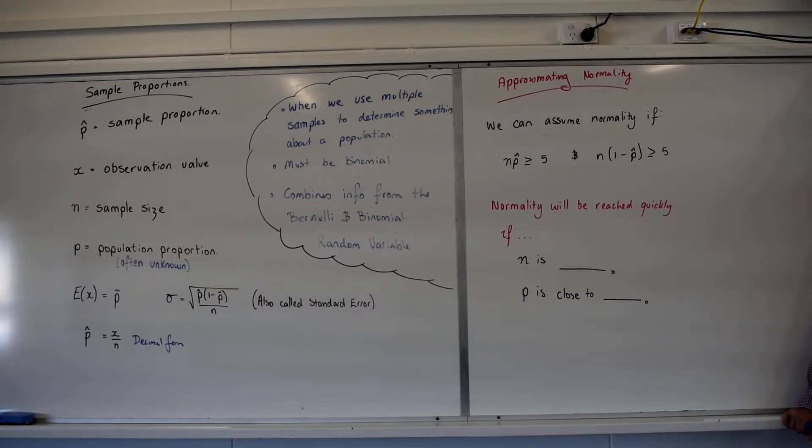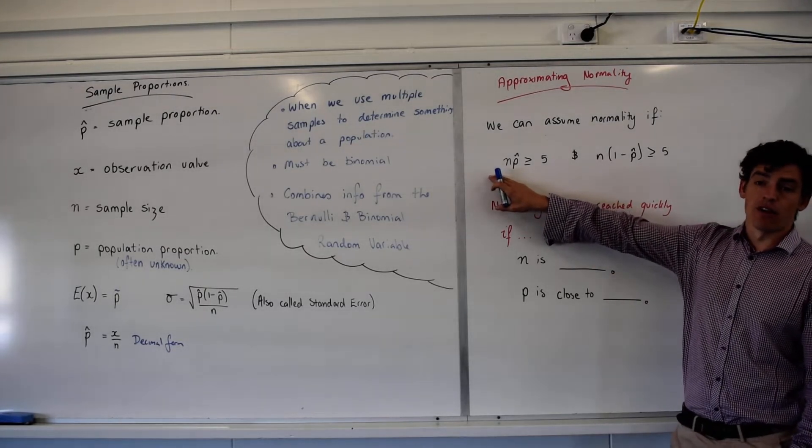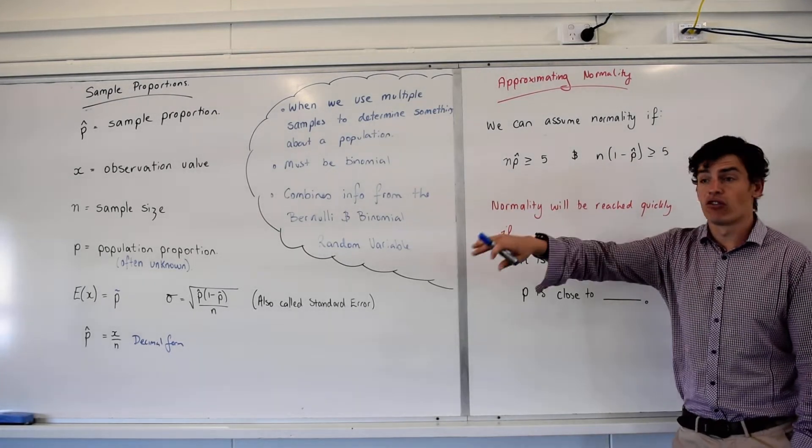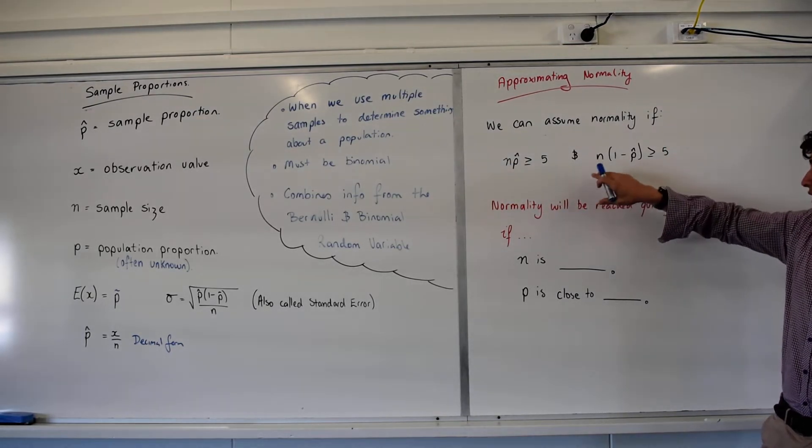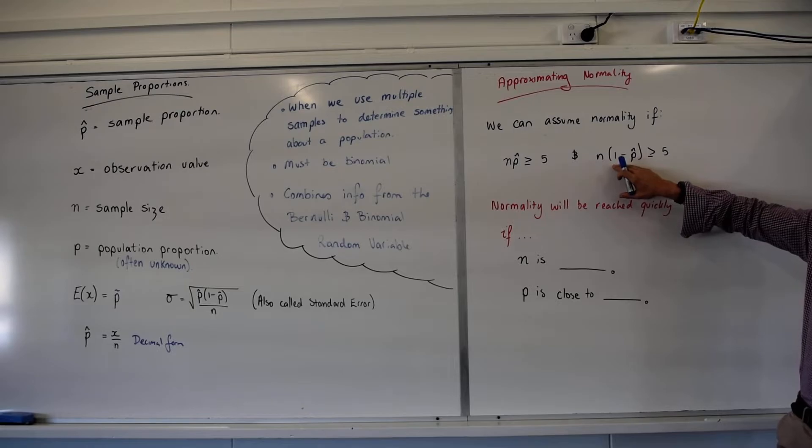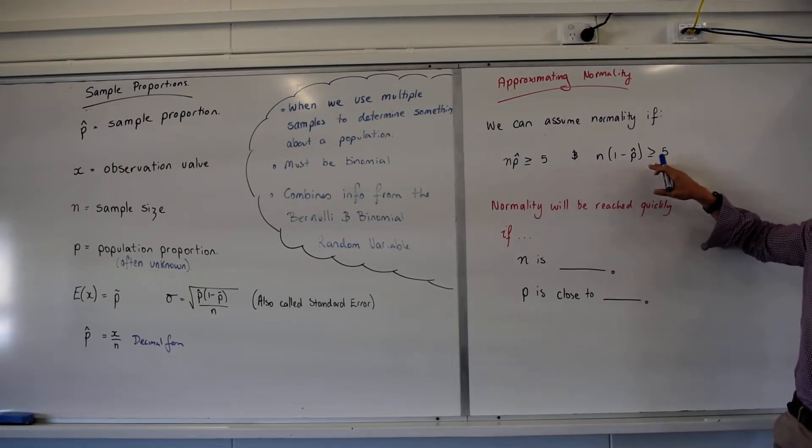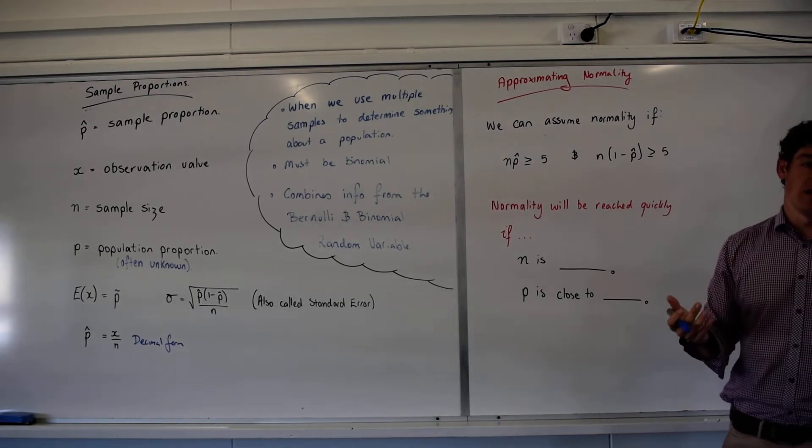Wait, what's the difference between them? Let's say P was 0.6 here, right? It would be my sample size of 100 times 0.6, which would be 60. And then I'd go 100 times 1 minus 0.6, which is 0.4, 100 times 0.4, which is 40. All good, so I can assume normality there.